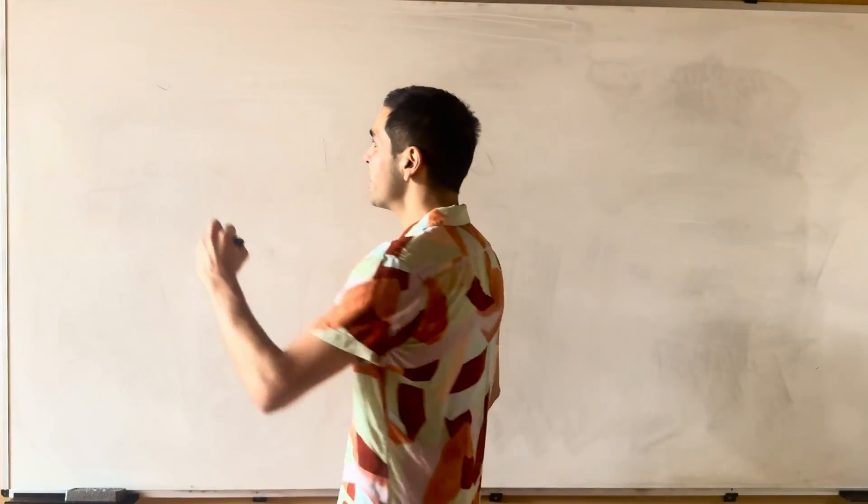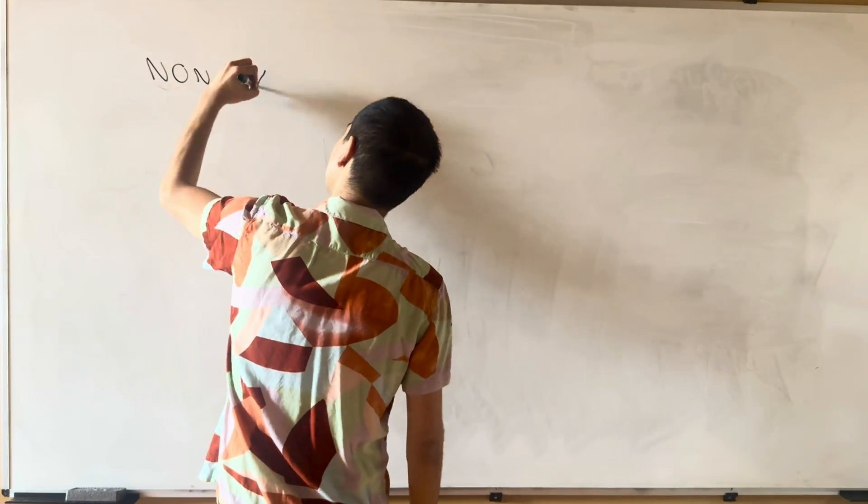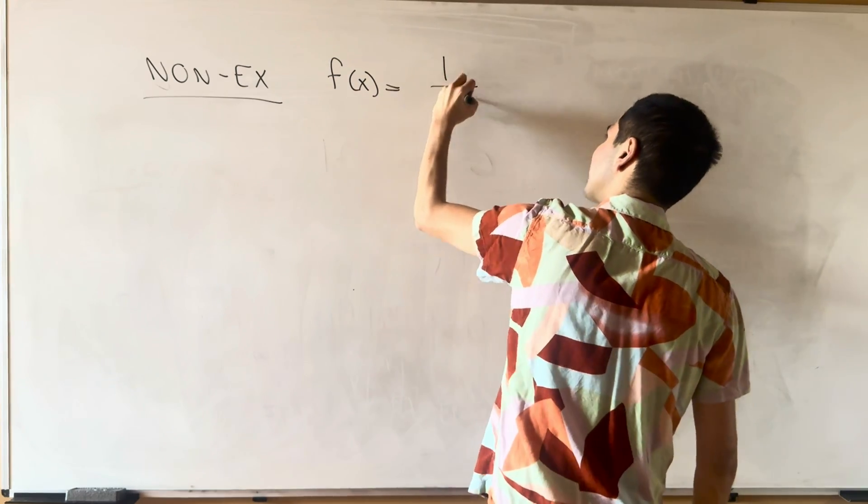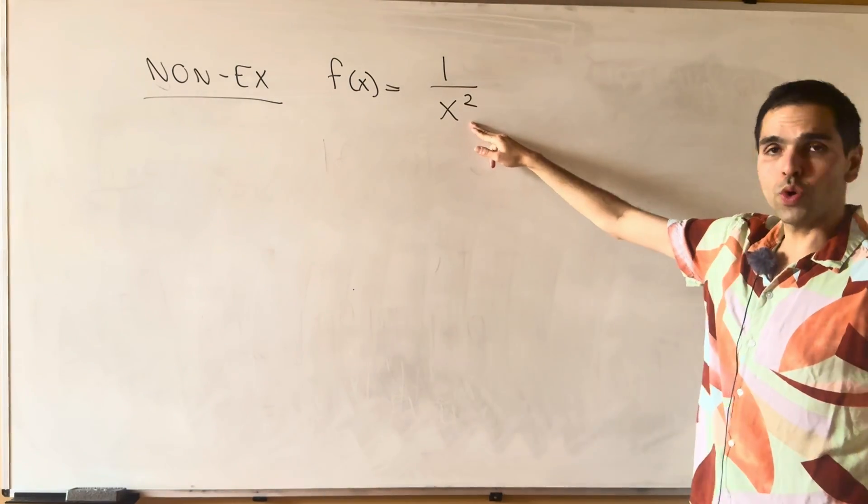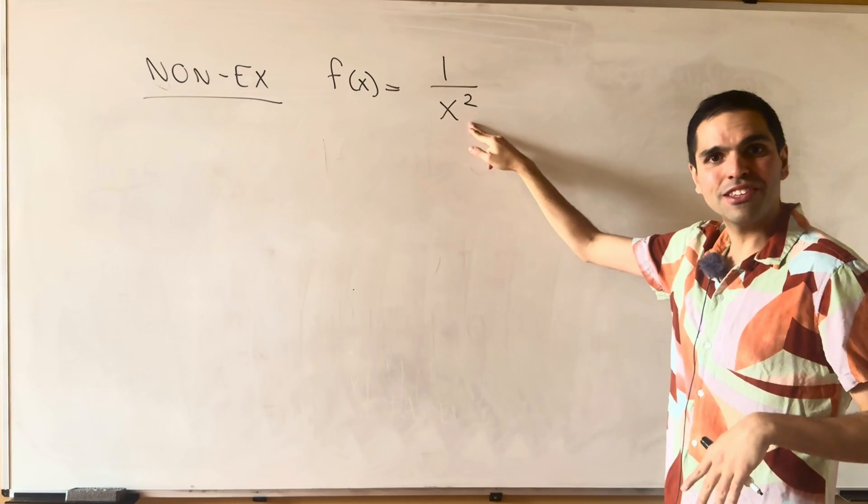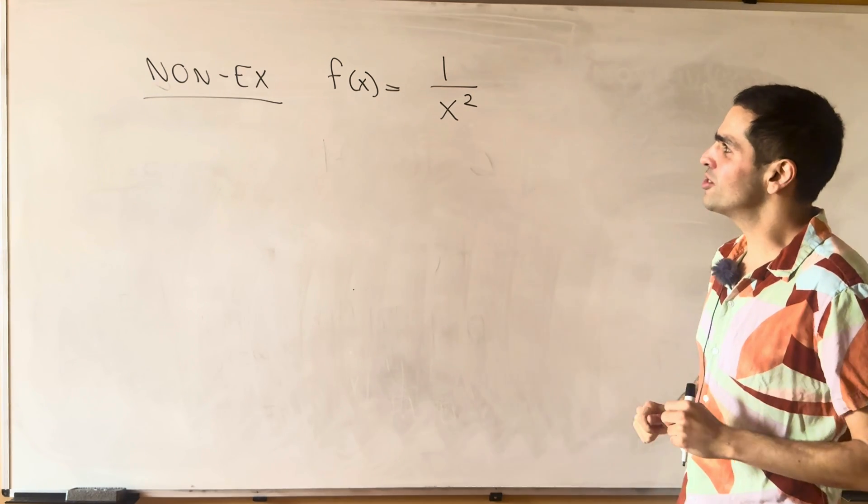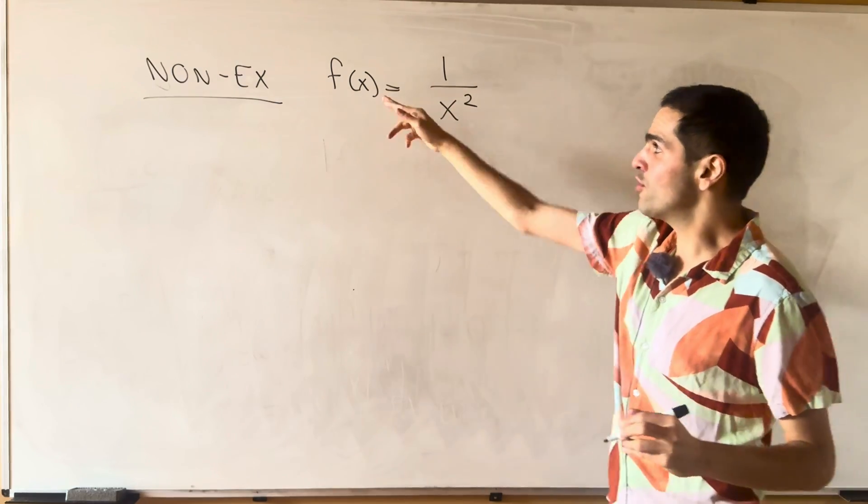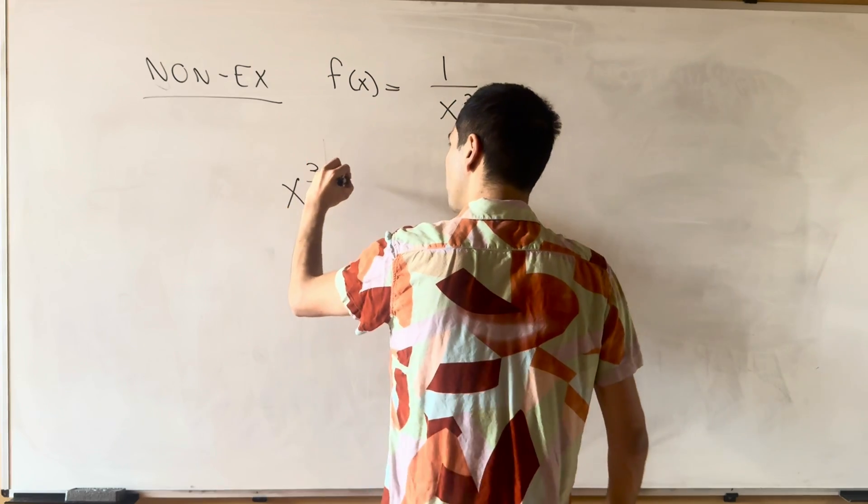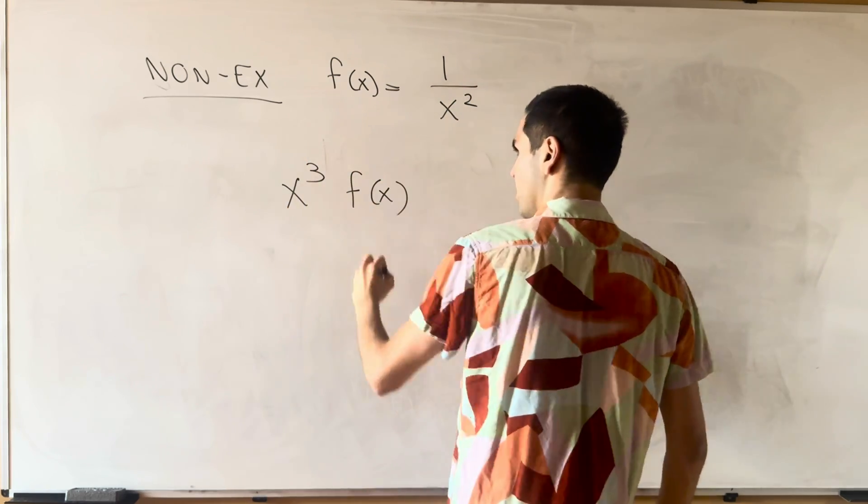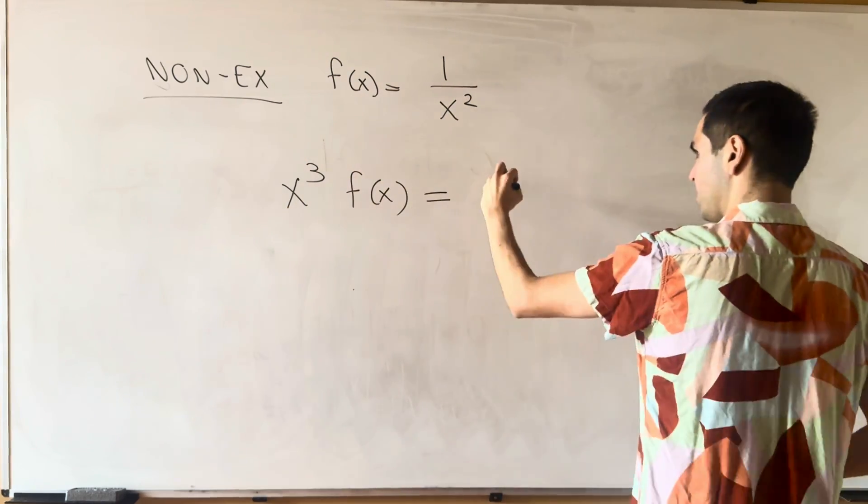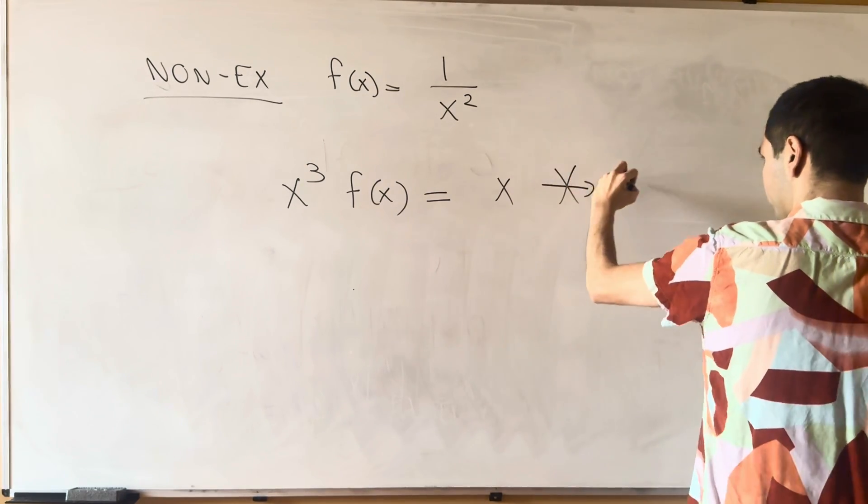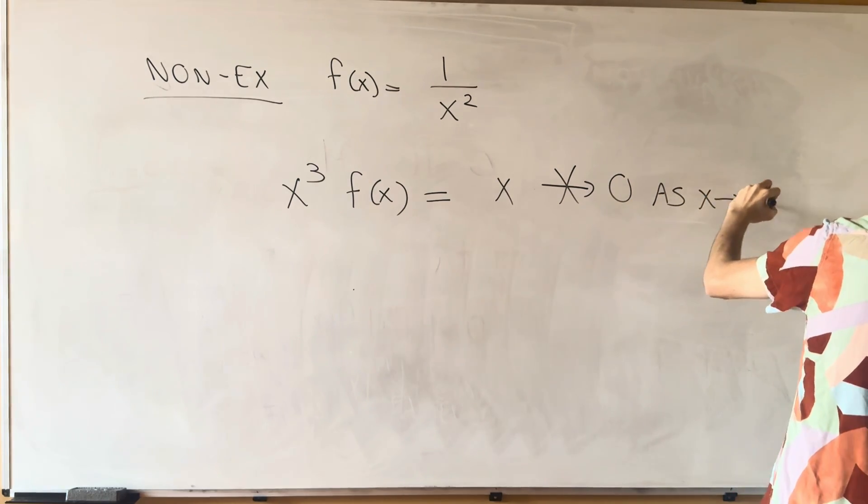So let me give you a very good non-example of this. So if f of x is, let's say, 1 over x squared, then sure, all the derivatives of f, they go to zero as x goes to plus or minus infinity, but it's not Schwarz because, for example, if you take x cubed times f of x, then that becomes x, but you see that does not go to zero as x goes to plus or minus infinity.